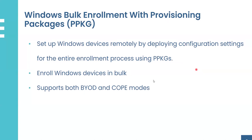The bulk enrollment feature lets you set up Windows devices remotely by deploying configurations using provisioning packages. Normally an admin goes through a lengthy process to set up each device — installing Windows, configuring settings, and adding necessary apps. With provisioning packages, admins can create a single package with all needed settings and share it with users via USB, email, or similar. This way admins can enroll Windows devices in bulk, and it supports both BYOD and corporate enrollment modes.